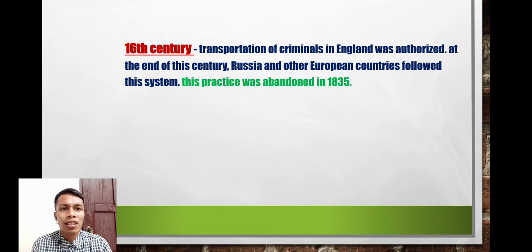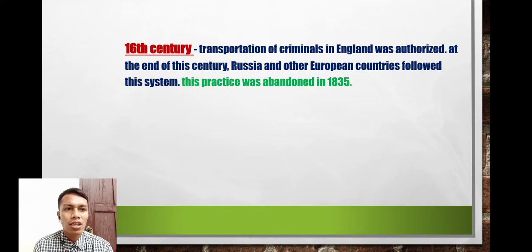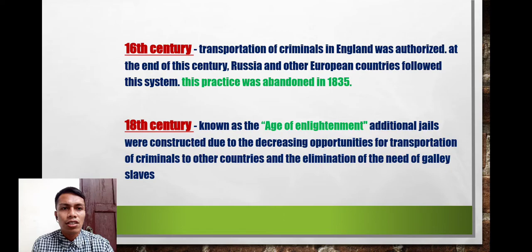In the 16th century, transportation of criminals in England was authorized at the end of this century. Russia and European countries followed the system. The transportation system was used because the number of offenders was growing and they could no longer be housed in confinement facilities, so to prevent overpopulation, offenders were transported to other places. This practice was abandoned in 1835.